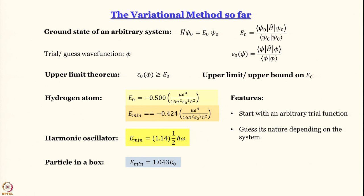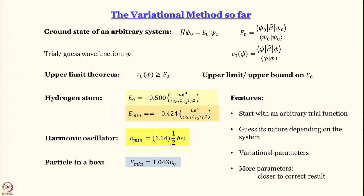We have to guess the nature of the trial function depending on the system, and this trial function must be associated with variational parameters — parameters that we can vary and see how that variation affects the energy of the system, and for which value of the parameter we get the minimum energy. The more parameters we use, the closer we get to the correct result; the downside is the calculation becomes more tedious. But if you have sufficient computational power, it is better to use as many parameters as you can — there is no problem of over-parameterization; we are saved by the upper limit theorem.